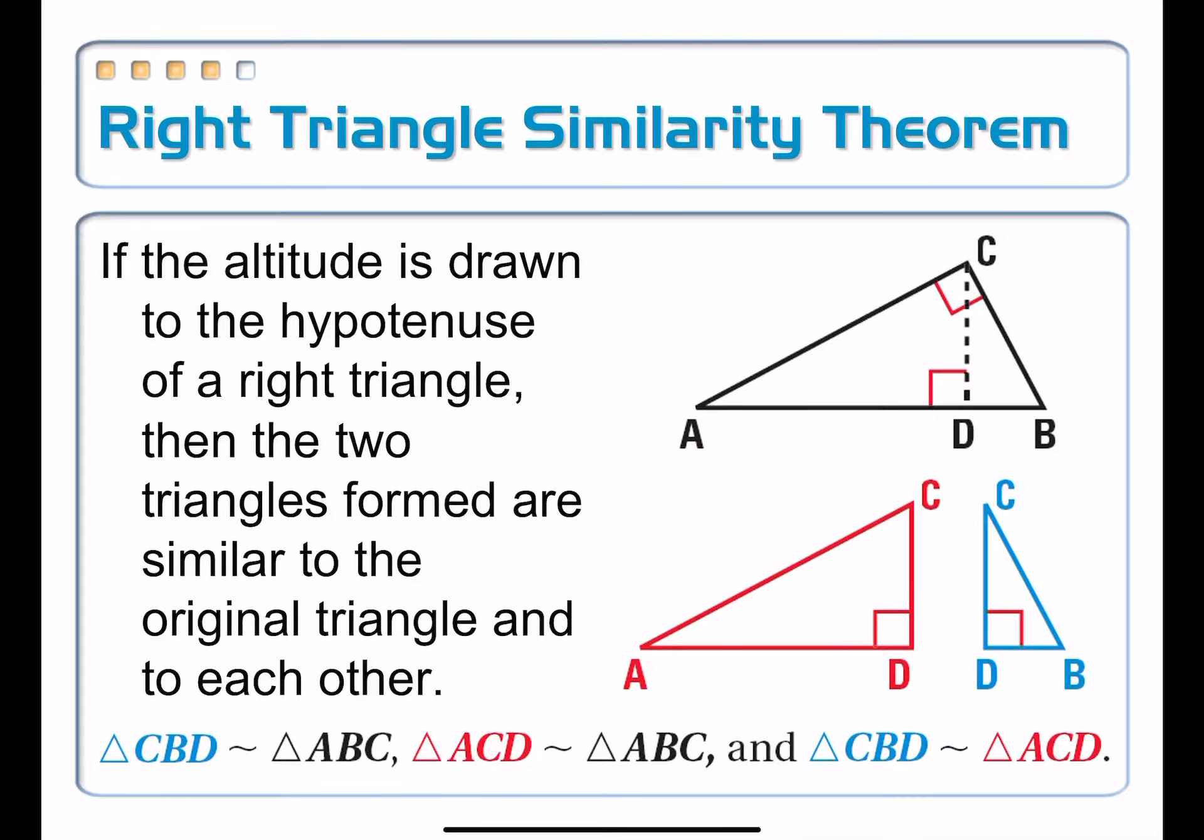As the previous video showed, whenever we have a right triangle and we draw in the altitude that extends from the vertex of the right angle to the hypotenuse, it creates two right triangles, and all of the triangles are similar to each other.